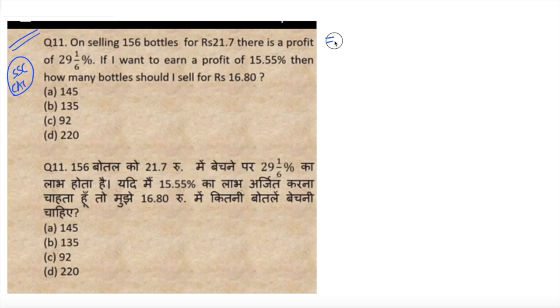First of all, we need to understand this is not a calculative question. It looks like there are many calculations, but if you write it properly, calculation will be very easy. We need to understand what is the value of 29 1/6. When we solve 29 1/6, it's nothing but 175 by 6 percentage. That means this is 7 divided by 24. So this 7 divided by 24 is the ratio. This must be cost price, this must be profit, and 31 rupees is the selling price.